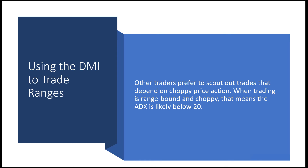If the ADX is likely below 20 and the DI plus and minus were fairly close together, think about what would happen if the ADX started climbing above 25 and the lines crossed over and started to widen — you would have the beginnings of a strong trend.